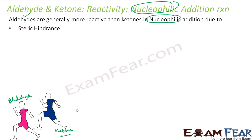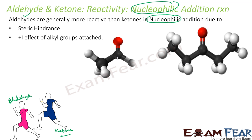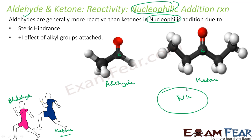Aldehydes are more reactive. There are two reasons: the first is steric hindrance and the second is the plus I effect. Looking at the aldehyde versus the ketone - the carbon which has to be attacked - in the ketone there is less space for a nucleophile to attack due to steric hindrance. But in aldehyde, the nucleophile can attack easily because there is hydrogen here, which is small and provides comfortable space for the nucleophile.